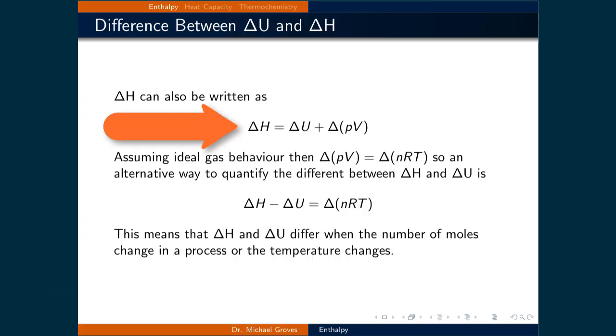We can write the change in enthalpy in a more general form as delta H is equal to delta U plus delta PV. If we can assume ideal gas behavior, then we can substitute PV for NRT. This provides an alternative way to quantify the difference between the change in enthalpy and the change in internal energy.